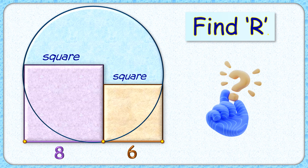Welcome everyone. This interesting question gives us two squares with side lengths 8 and 6 centimeters each, and a circle passing through three vertices — vertex 1, vertex 2, and vertex 3. With this limited data, we have to find the radius of the circle.